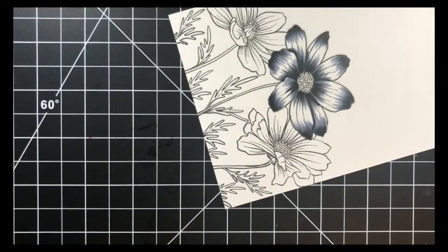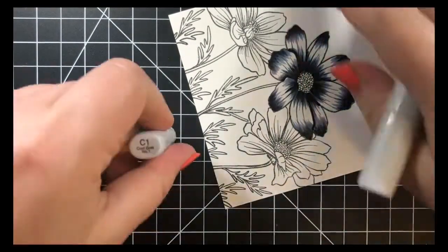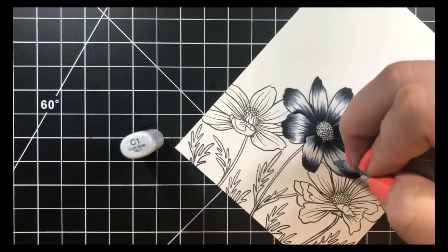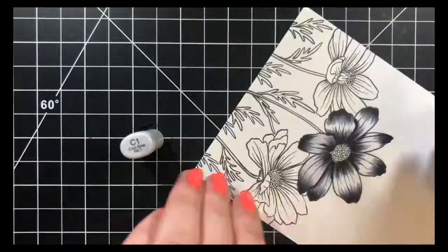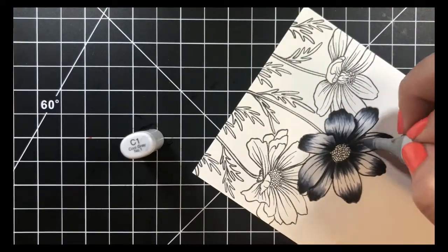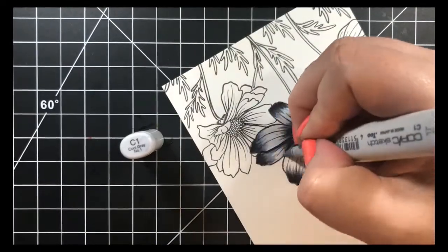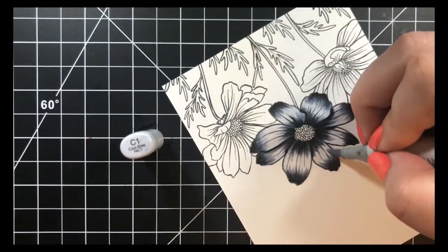Because this is such a lighter color than what I was using, I'm going over it very quickly. I'm laying down my color and moving on to the next petal. I don't want to take away the darkest colors that I laid out.